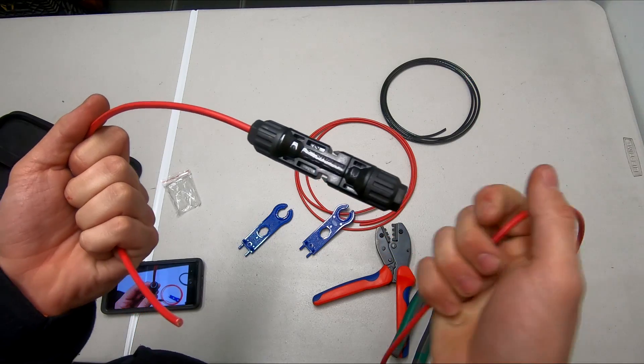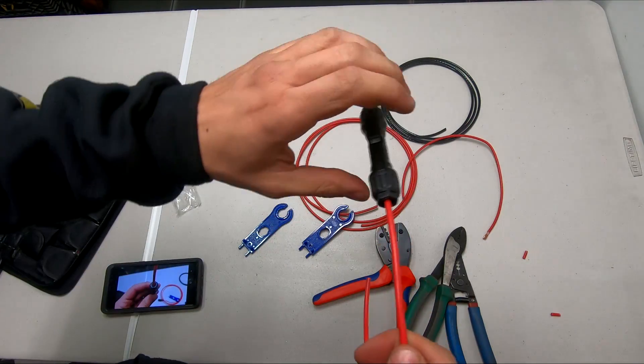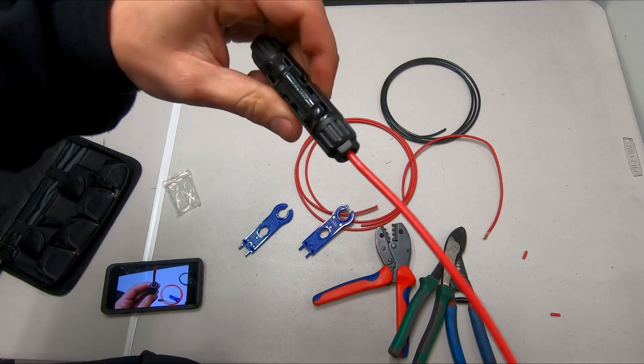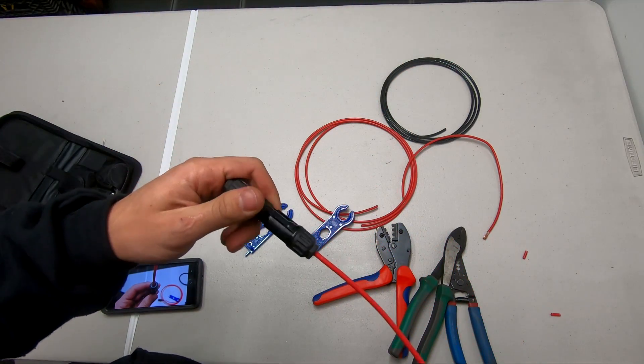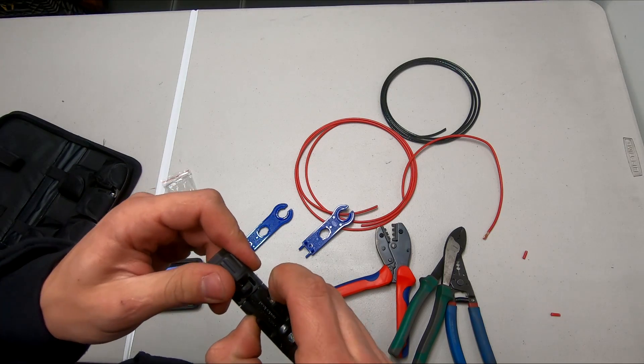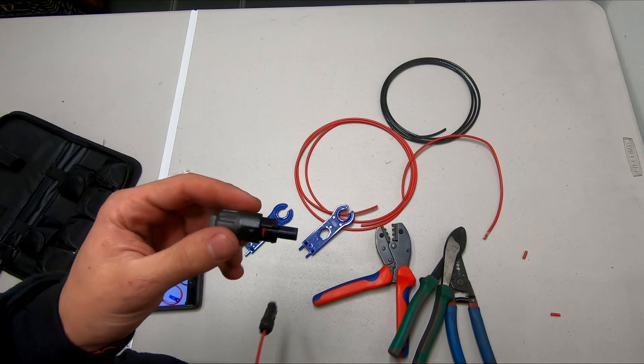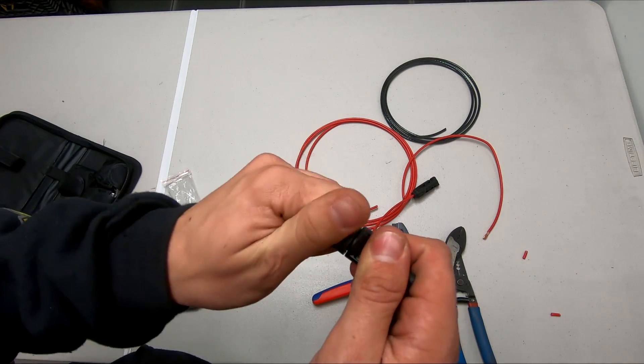As you can see, the one that I crimped the wrong way pulled right out and it didn't take too much effort. If I now try and pull the one crimped properly as hard as I can, it still isn't coming out. It's still connected well and will be good for use in my system for a long time.